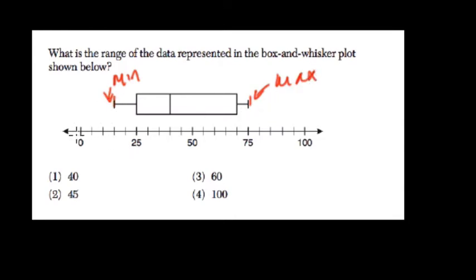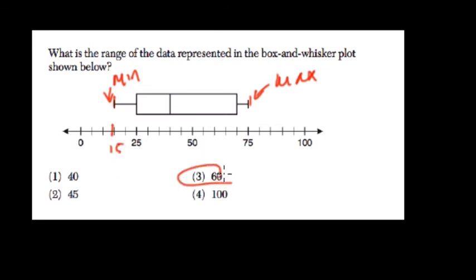The interval we're choosing right here is by 5. So 5, 10, 15, 20. Counting up: 5, 10, 15 — this is 15. So 75 minus 15, that's our range, and that's 60. Let's keep going here.